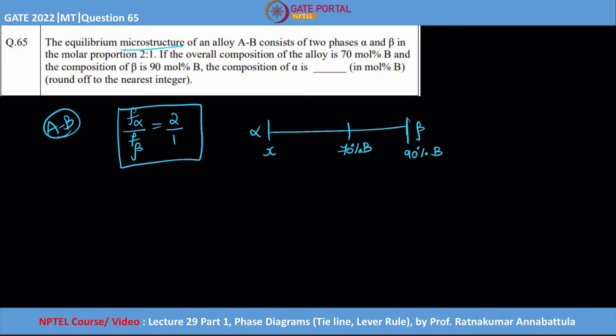Now from this you can easily calculate from the lever rule the mass fractions of alpha and beta. If I want to calculate F_alpha, that is equal to the opposite length divided by the total length.